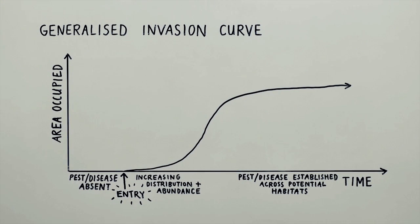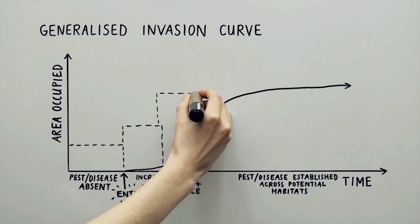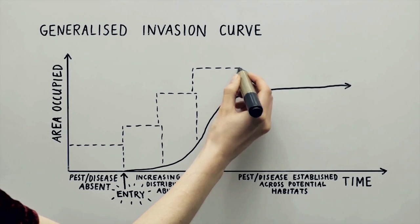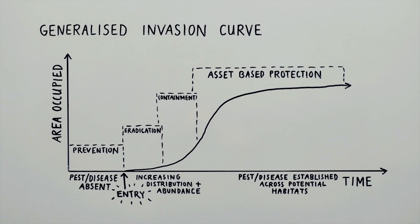The invasion curve also identifies the most appropriate course of action to take depending on the distribution and abundance of the invasive species. These are categorised as prevention, eradication, containment and asset-based protection.